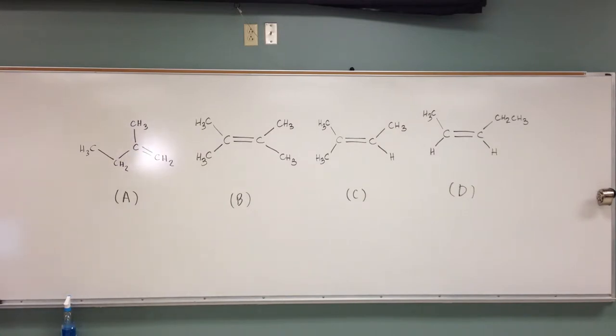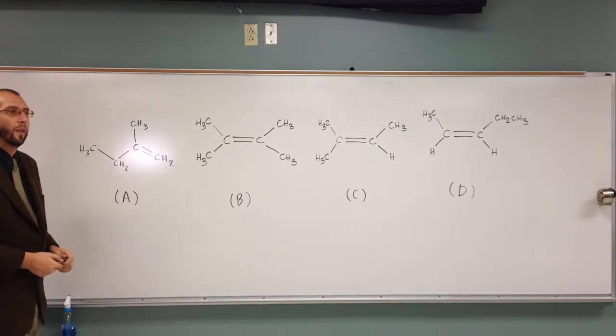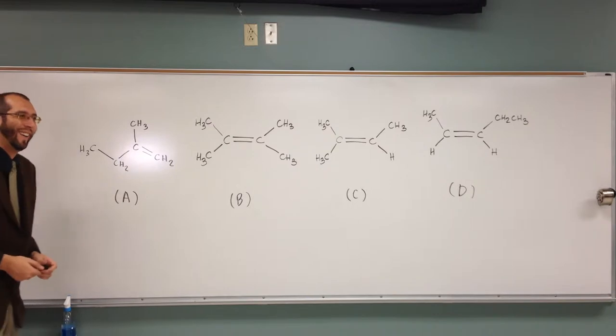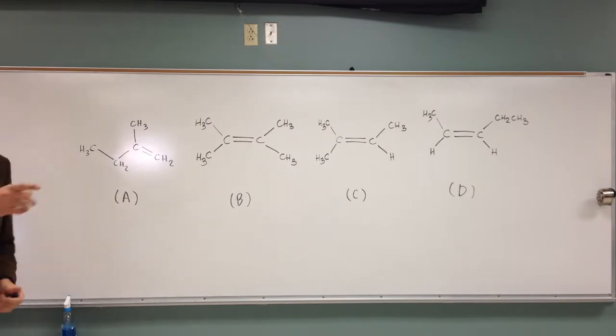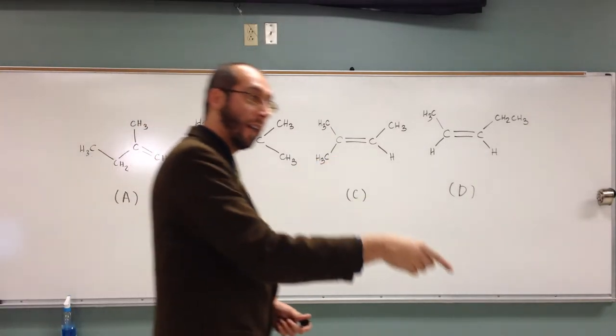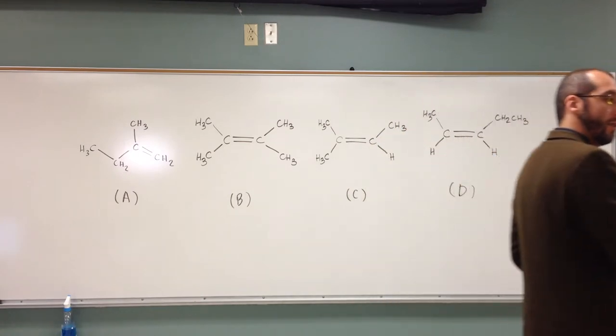So, what would be the name of the rule that you would want to follow to determine which alkene is most stable? Yeah, Zaytsev's rule. Okay, so what does Zaytsev's rule tell us? The most substituted. The most stable alkene is the most substituted.